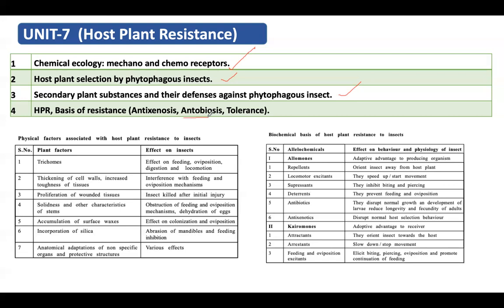Antibiosis is a plant characteristic where it causes a direct or indirect effect on the biology or behavior of the insect. Tolerance refers to the plant characteristic where the plant withstands the damage caused by the insect.